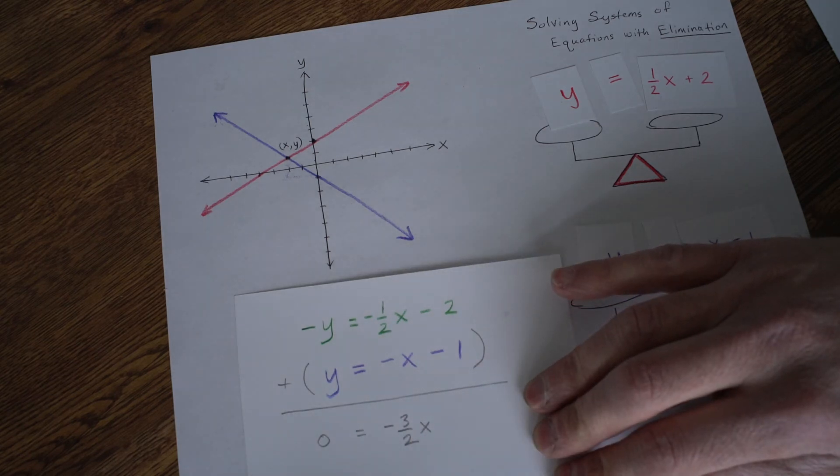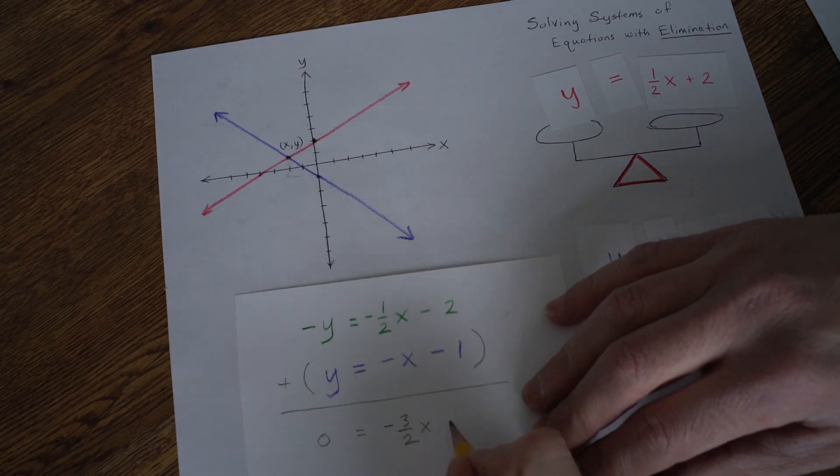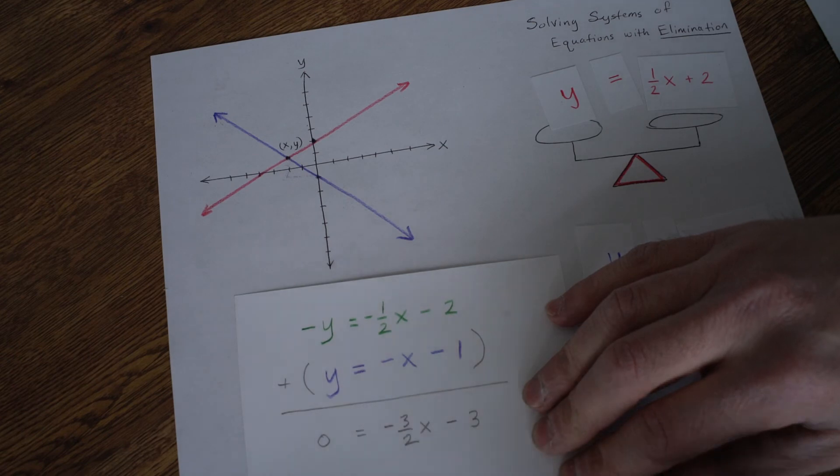3 halves because 2 halves is a whole. And then there's one more. So negative 3 halves. And negative 2 plus a negative 1. That's negative 3.